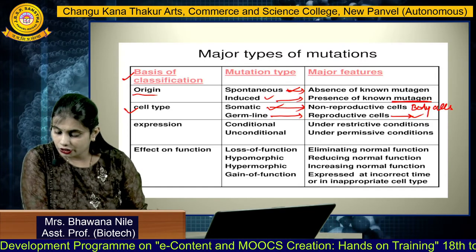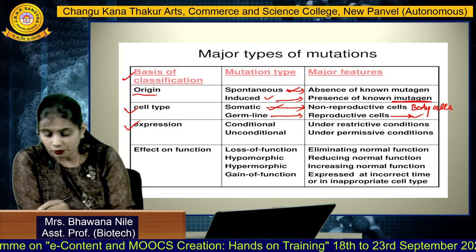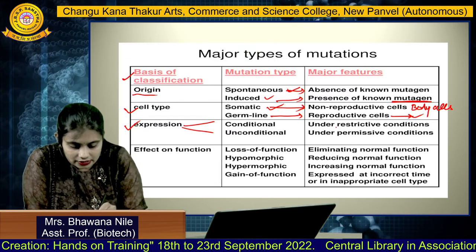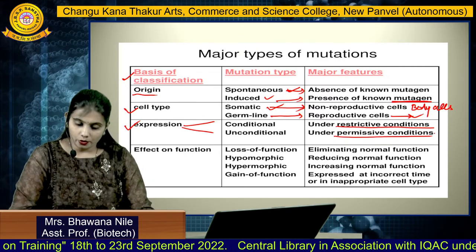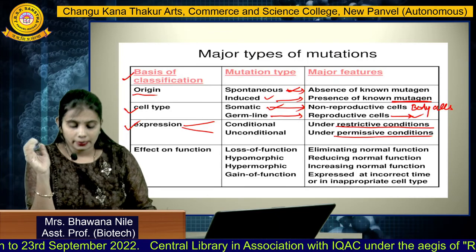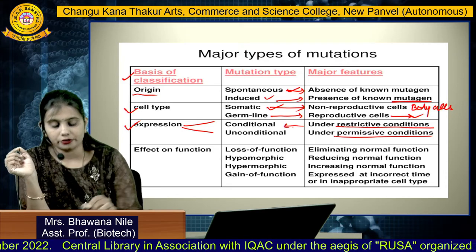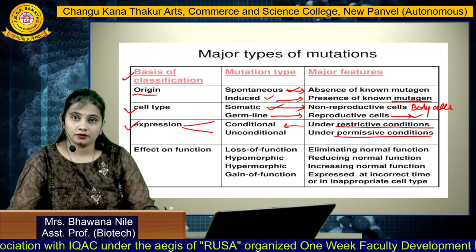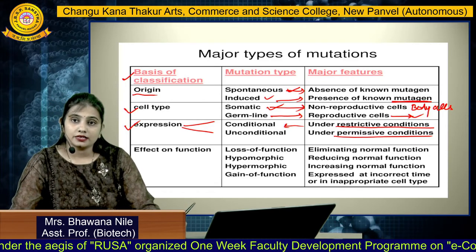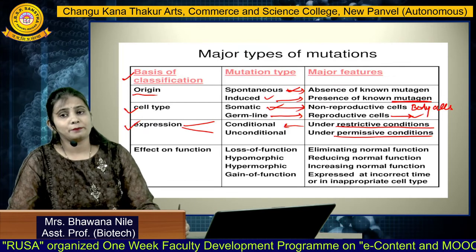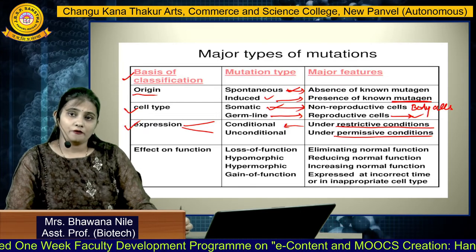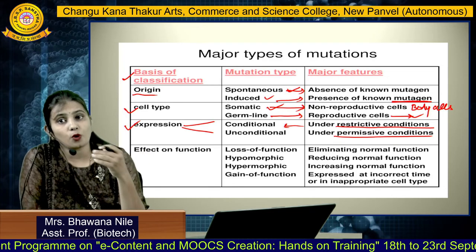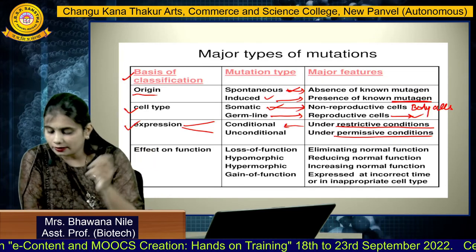The third basis of classification is based on expression. Mutations are categorized into conditional and unconditional types. Conditional means restrictive condition and permissive condition. Under a restrictive condition, the wild type cell becomes mutant, while under the permissive condition it remains in the normal phase. A classic example of an expression system is temperature-sensitive mutations, where at a certain temperature the cell tends to change from wild type to mutant phenotype.